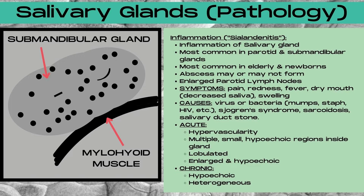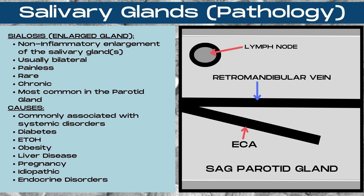In cases of chronic sialadenitis, the gland is going to be hypoechoic and heterogeneous. The next salivary gland pathology is sialosis, and this is an enlarged gland but not due to an inflammatory response — it is a non-inflammatory enlargement of one or more salivary glands. Most commonly, this occurs bilaterally, is usually painless, can be a chronic condition, is most commonly found in the parotid gland, and is fairly rare. Causes include diabetes, heavy alcohol use, obesity, liver disease, pregnancy, endocrine disorders, or it can be idiopathic, and it's commonly associated with systemic disorders.